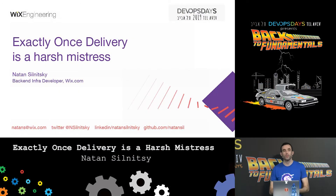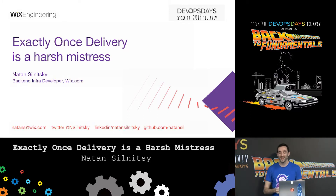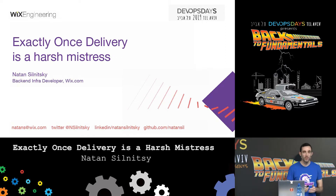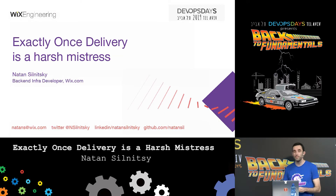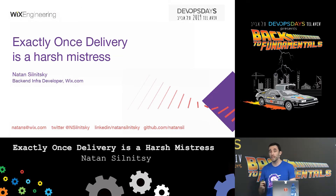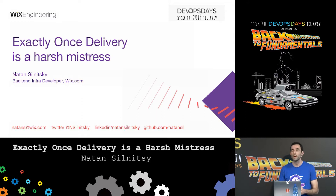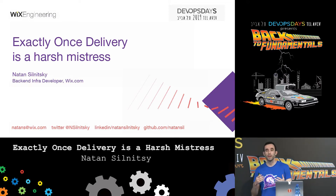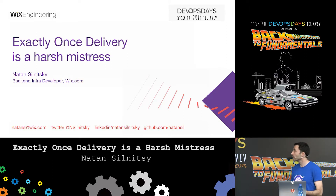I would like to start with a quick question - who is familiar with how Kafka Message Broker works? My name is Natan Solnitsky and I'm a backend infrastructure developer at Wix.com. I'm part of the team that builds libraries and tools on top of the Kafka Message Broker, and we've recently started incorporating Exactly Once delivery into our system. I thought it would be a good opportunity to share how exactly Kafka implements Exactly Once delivery and why it's so difficult.